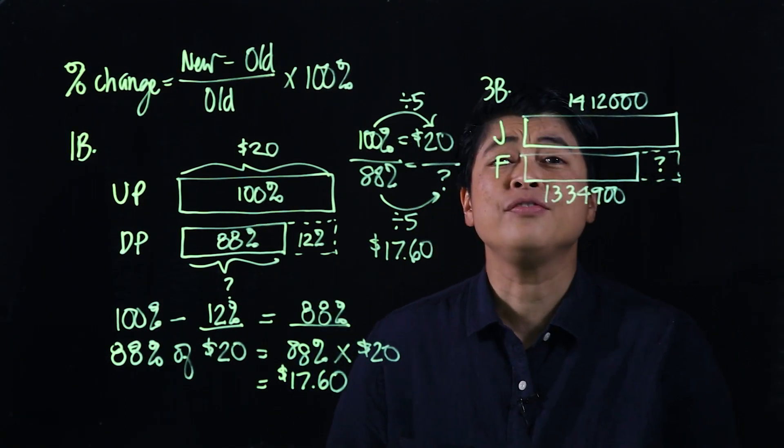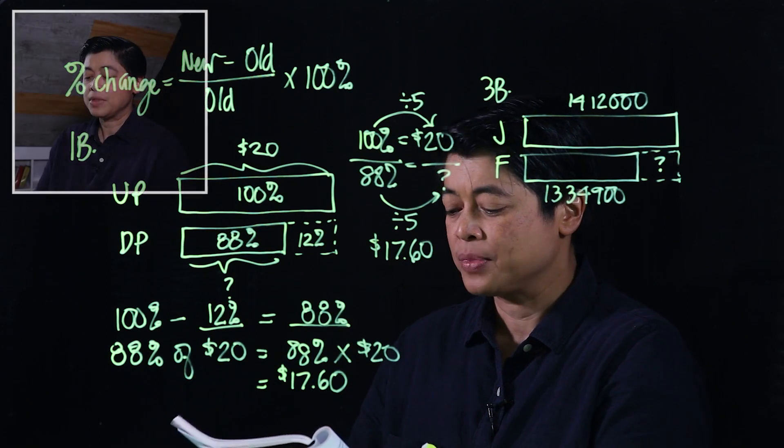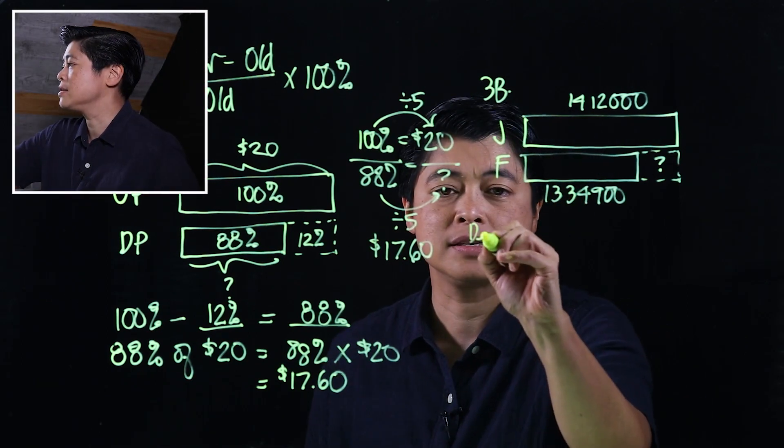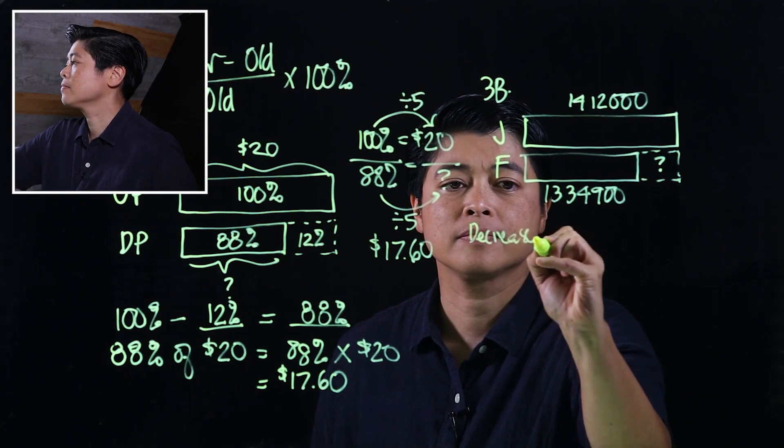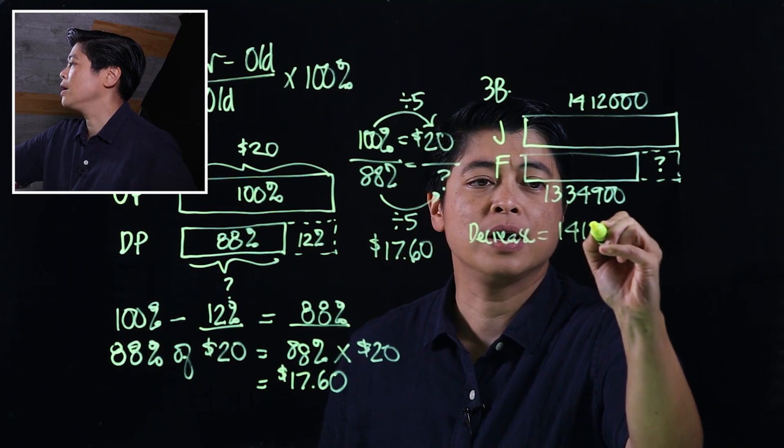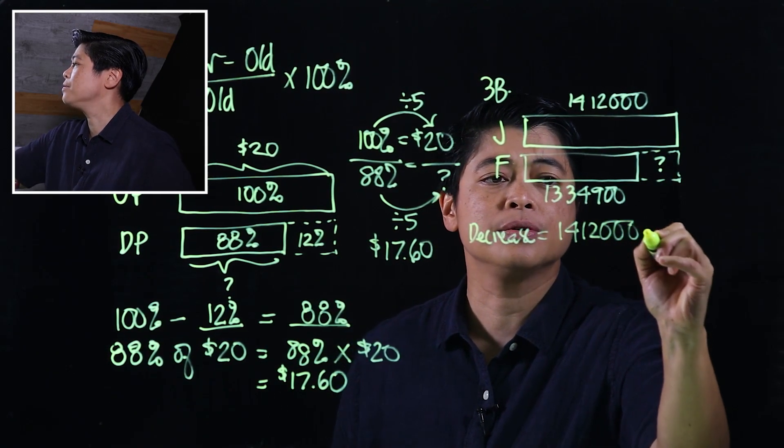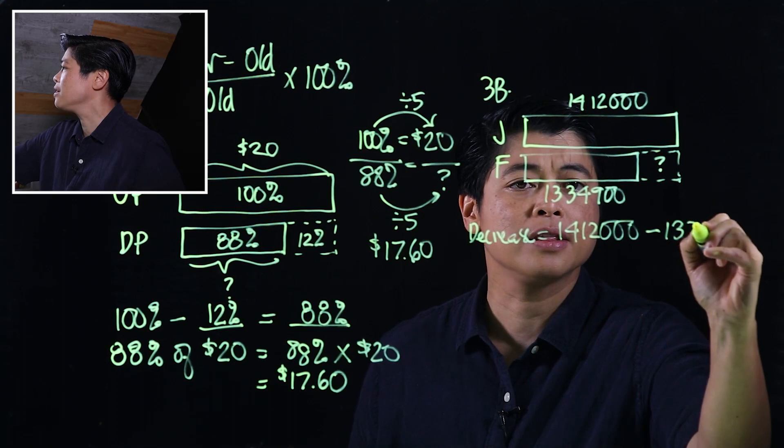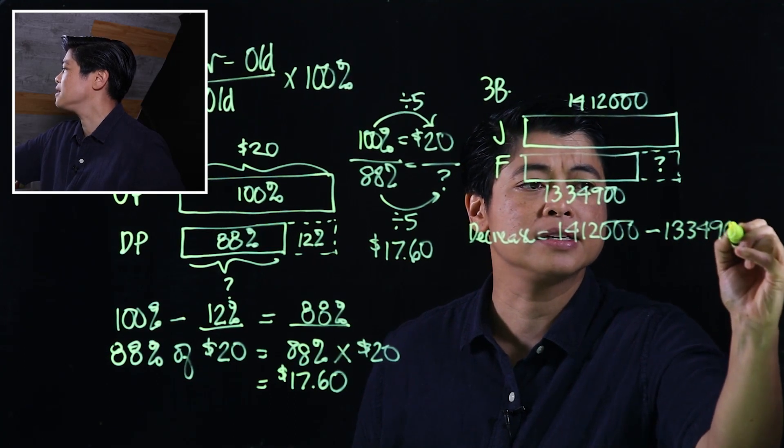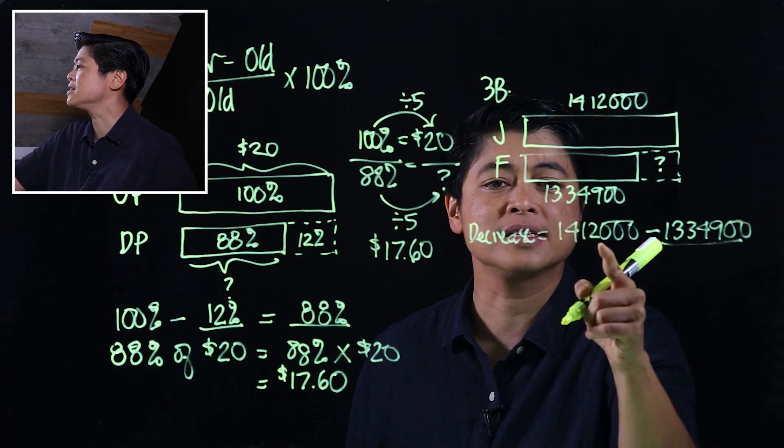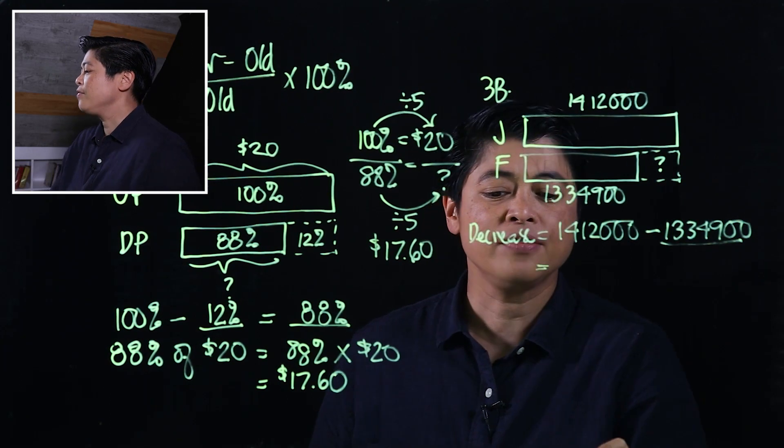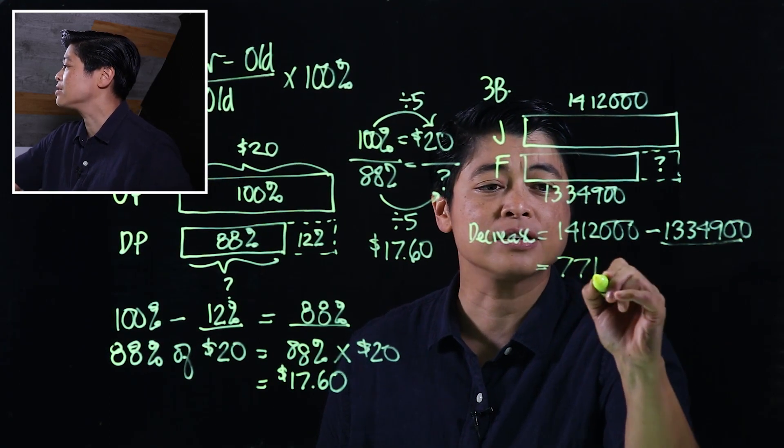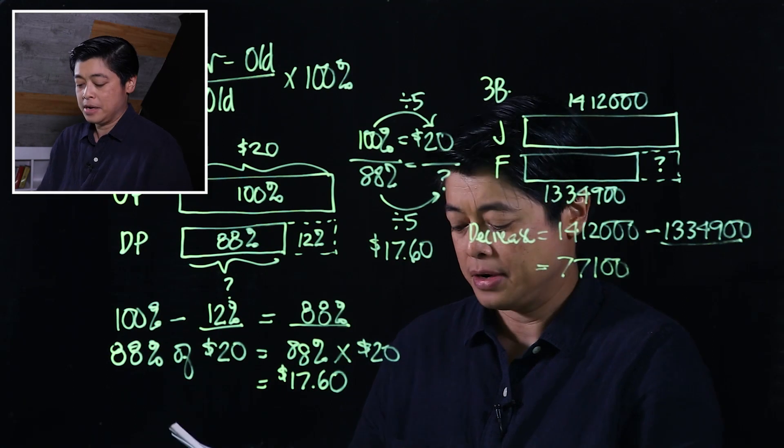So if we follow the book, the book starts with decrease equals 1,412,000 minus 1,334,900. So this is the blank, this is given. Okay, so if we subtract that, that's 77,100.